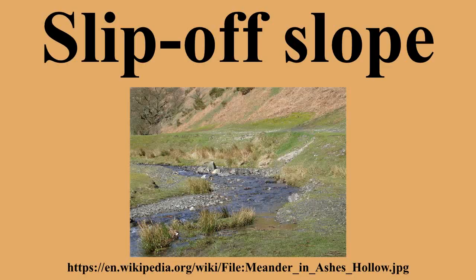The slip-off slope is the inside bank of a meander on a river where sedimentary material is deposited as a result of the slower flow rate. It is on the opposite side of the channel to a river cut cliff, a cut bank, which is formed by the erosive forces of the stronger current on that side.